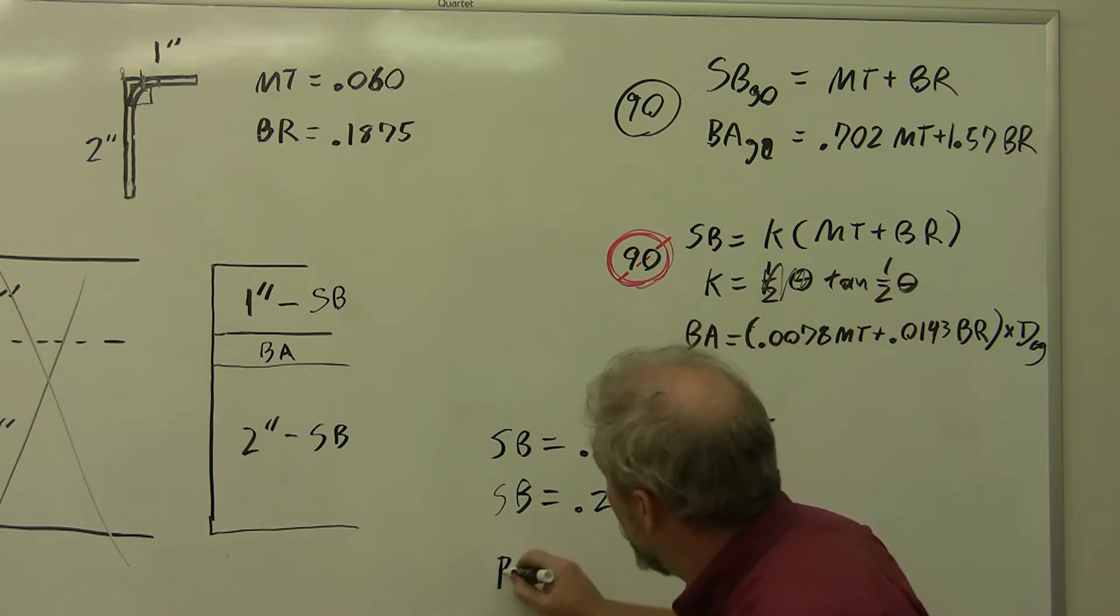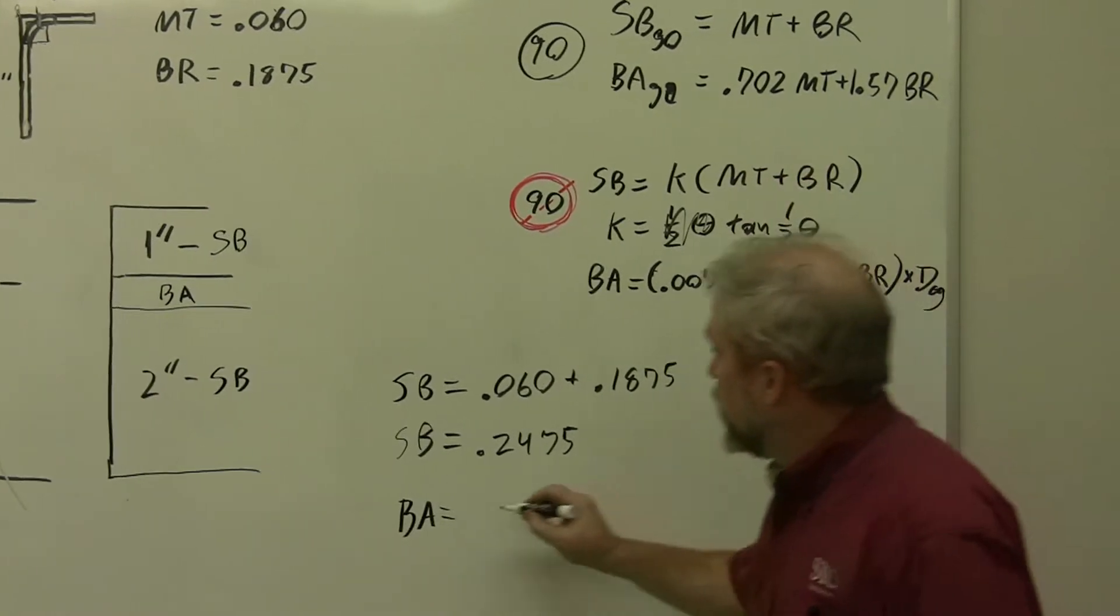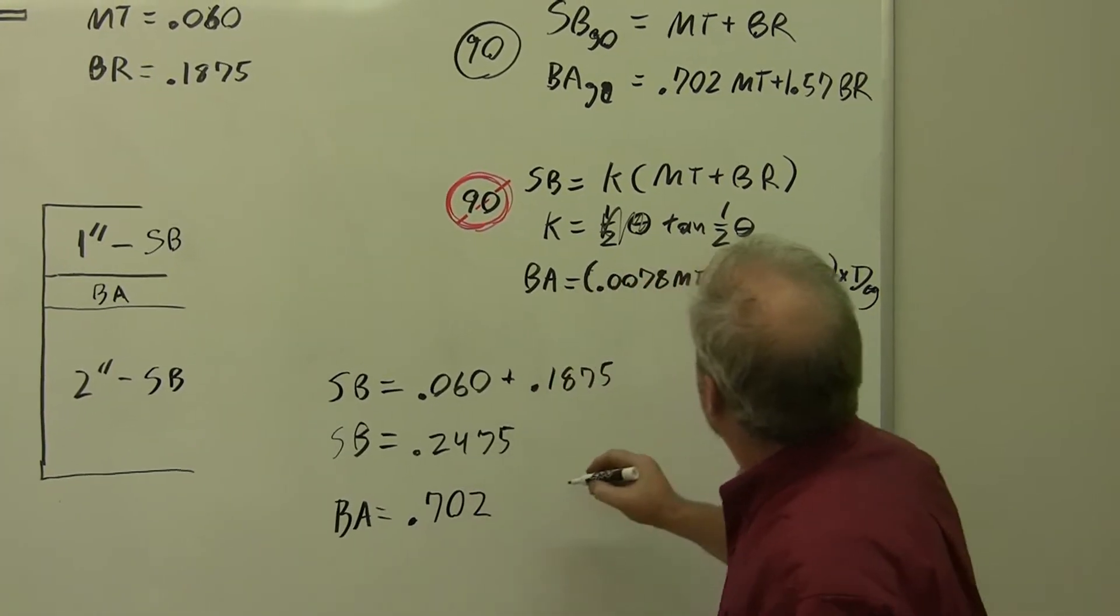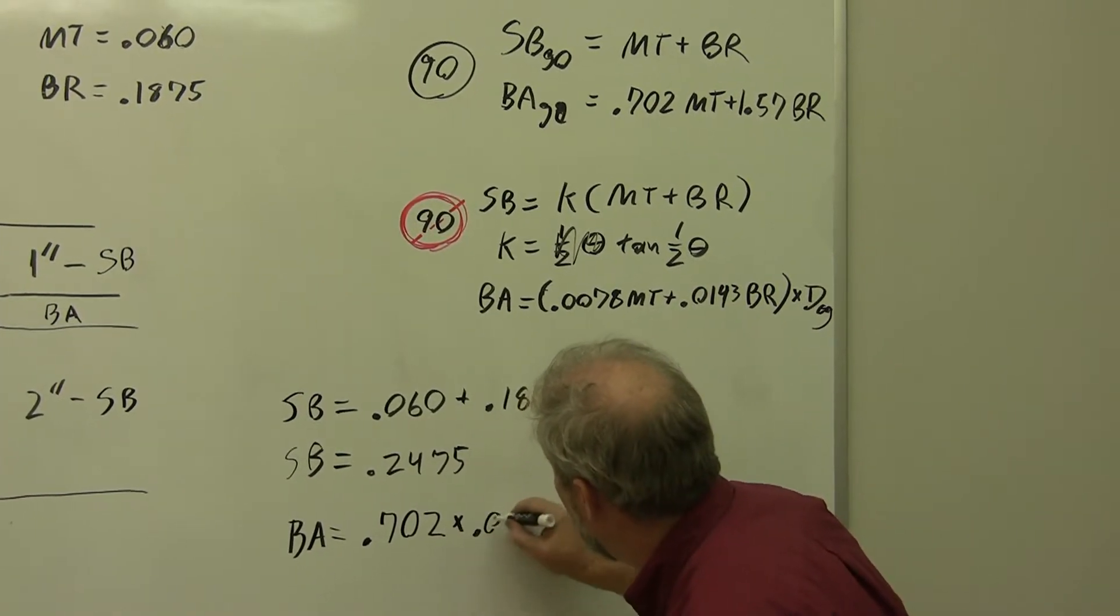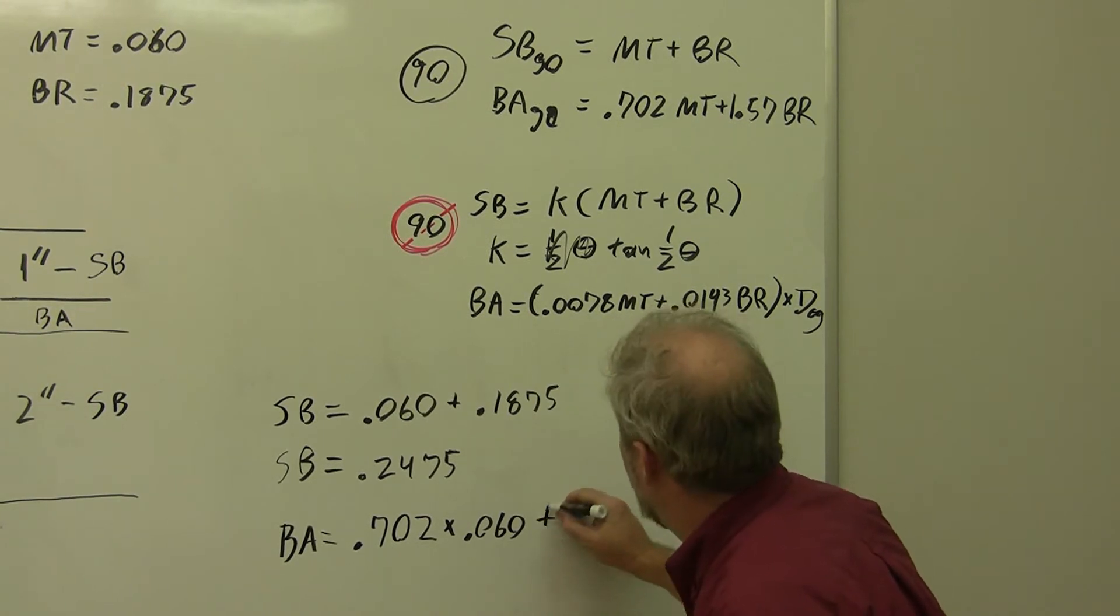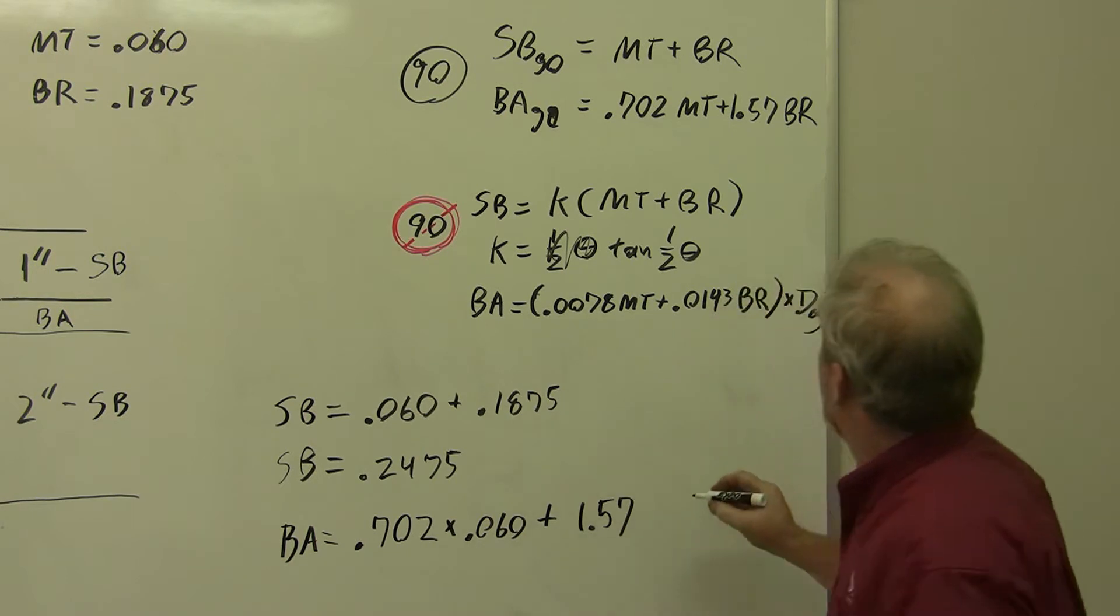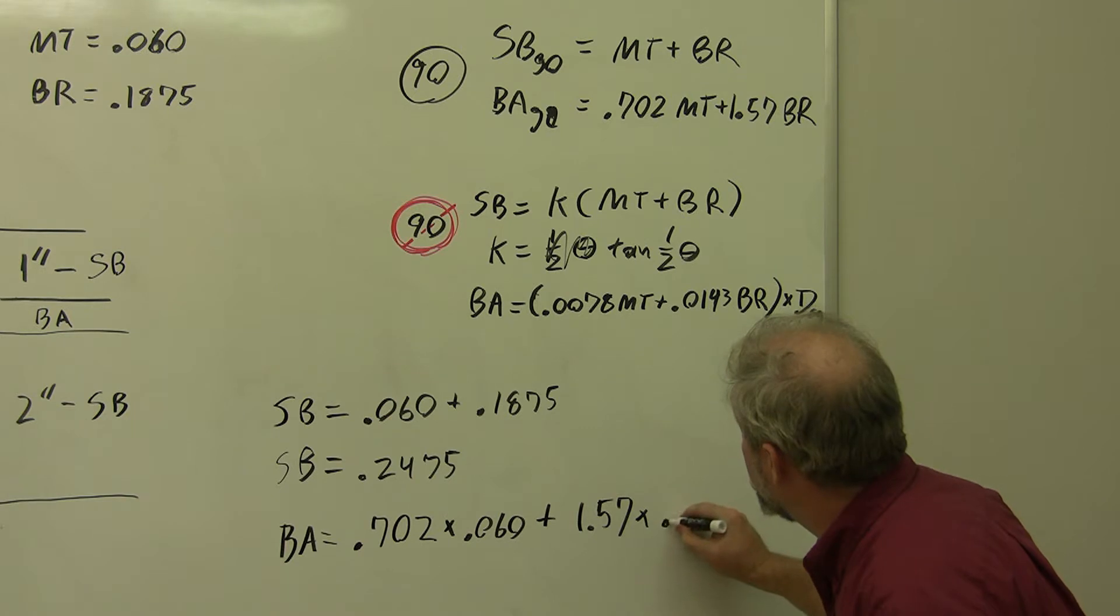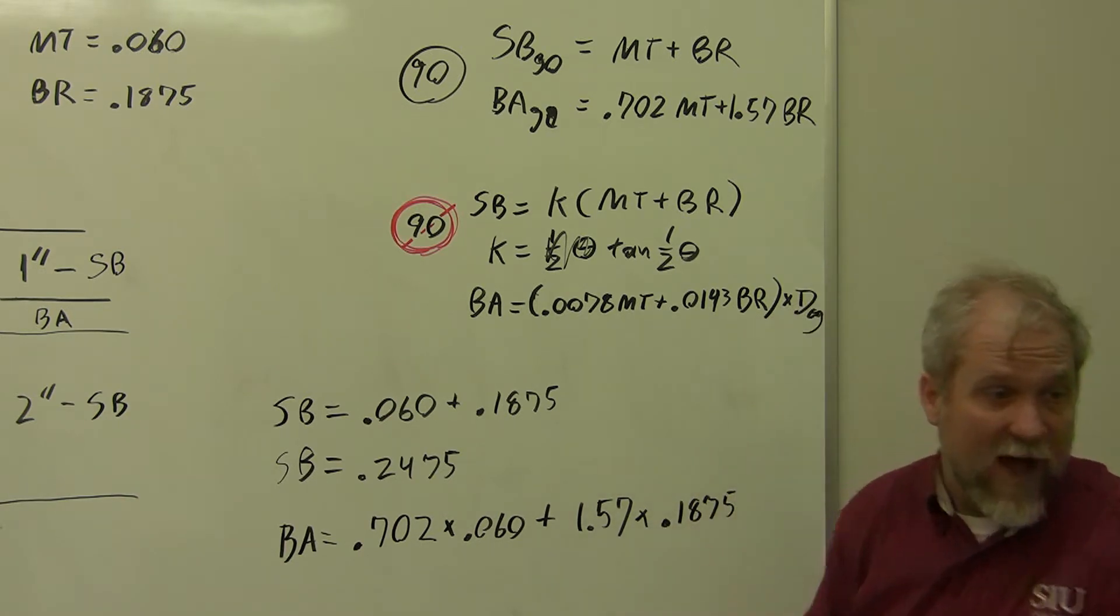Our bend allowance, and we're going to substitute the numbers in over here, equals 0.702 times our material thickness, which is 0.060 plus 1.57 times our bend radius, and our bend radius is 0.1875. So let's simplify.